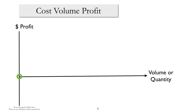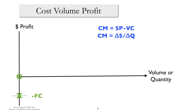We know a few things. We know that at the point where activity is zero, profit is equal to minus the fixed cost. That point has to lie on the graph. So, given that we know one point on the graph, we can ask, do we know the slope of the graph? And of course, we can calculate that by the contribution margin per unit.